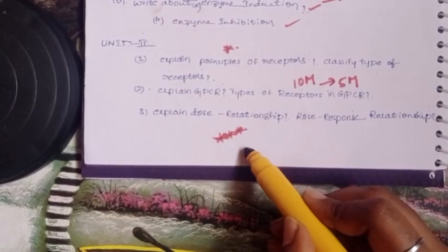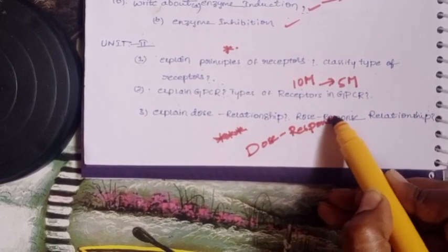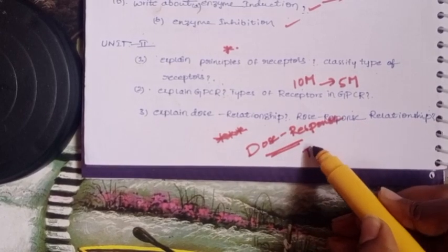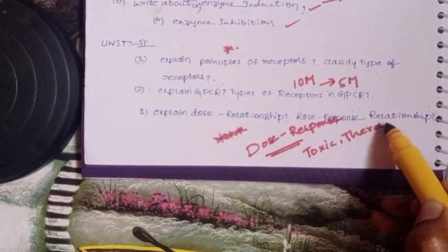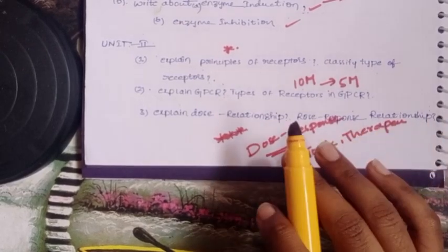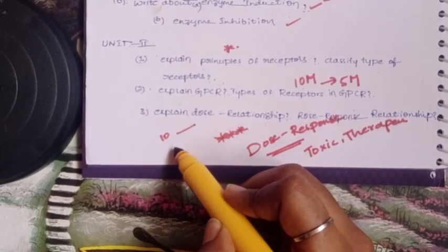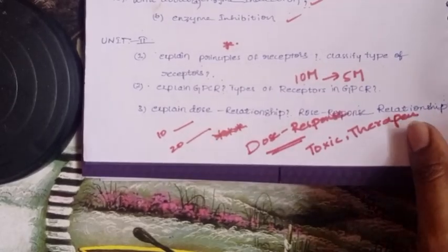Next, dose relationship or dose response - how the response depends on the dose, whether it may be toxic or therapeutic. For example: dose 10 mg versus dose 20 mg. We'll talk about dose response relationship.